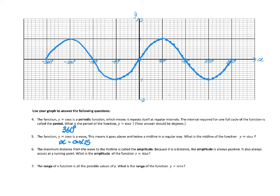Question 6: The maximum distance of the wave to the midline is called the amplitude — it's the furthest you will ever get from that midline. That distance is always 1. It doesn't matter if you're going down; a distance cannot be negative. So the amplitude of this function is 1.